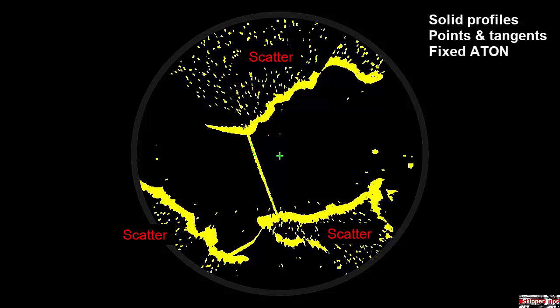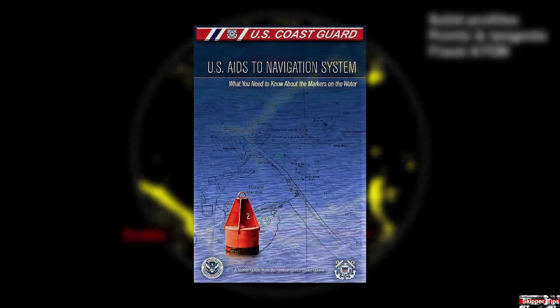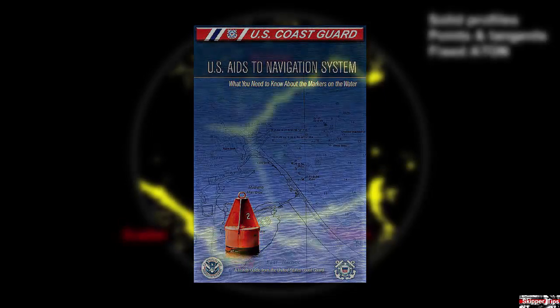Look for fixed aids to navigation on your nautical or electronic chart and compare those to the radar scope. Day beacons, lights, lighthouses, and ranges offer good reflectivity for safe radar navigation. Click on the link below this video to download a free boater's guide in PDF format of aids to navigation used in U.S. waters.